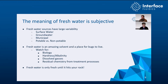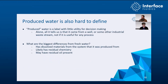Freshwater is only freshwater until it hits your rock — it's that great solvent, so the second it starts going into a system it starts interacting. Produced water is also very hard to define. The label 'produced' tells us only that it came from a well or industrial source — not whether it will be useful for your process. The biggest differences are that it has more dissolved materials, likely residual oil field chemistry, residual frac chemistry, and it's not uncommon to have residual oil present in produced water.